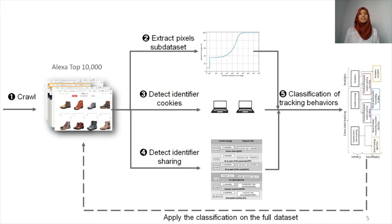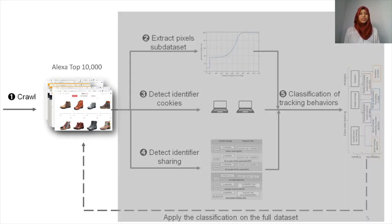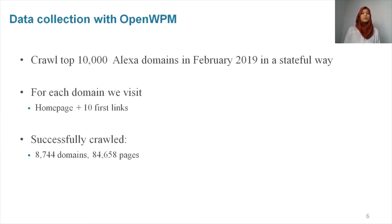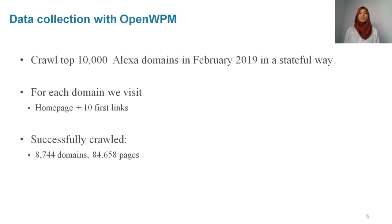This figure summarizes the five main steps we followed to detect different tracking behaviors — I'll guide you through this figure during the talk. In order to detect trackers, we first needed to simulate user behavior, browse different websites, and collect the data. For that, we used OpenWPA, an open-source crawler. We crawled the Alexa top 10,000 domains in February 2019. The crawl was done in a stateful way, meaning we used one browser instance and kept the user's profile, including cookies and browser storage, between site visits. For each domain, we visited the homepage and the first 10 links. As a result, we successfully crawled 8,700 domains with a total of 84,600 pages.